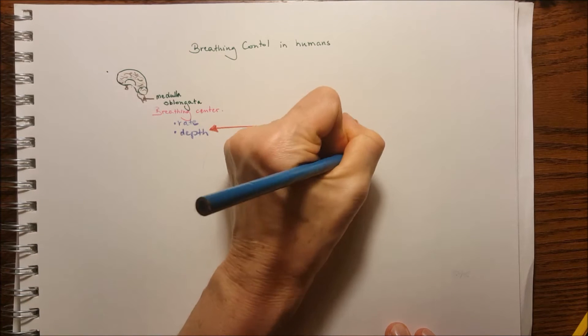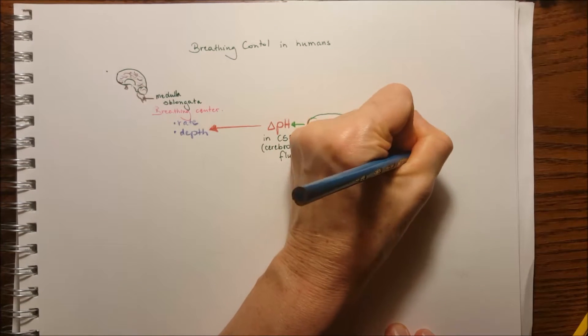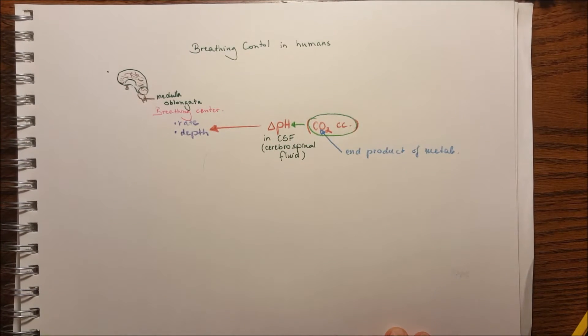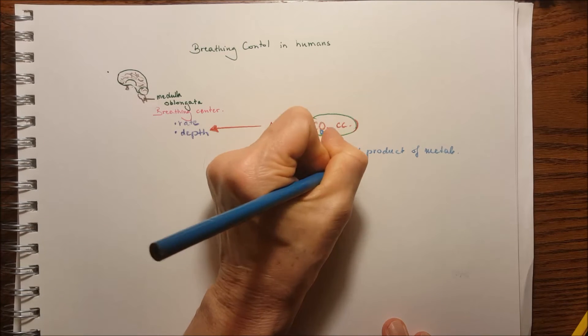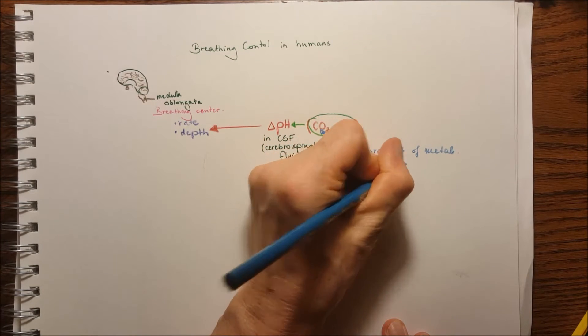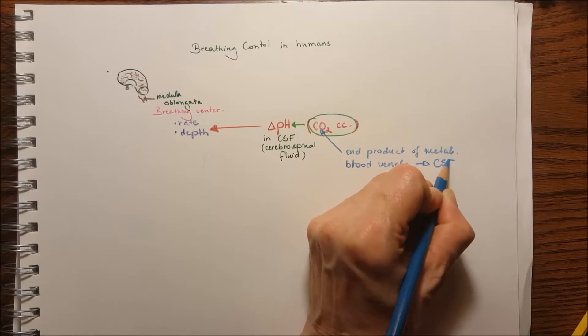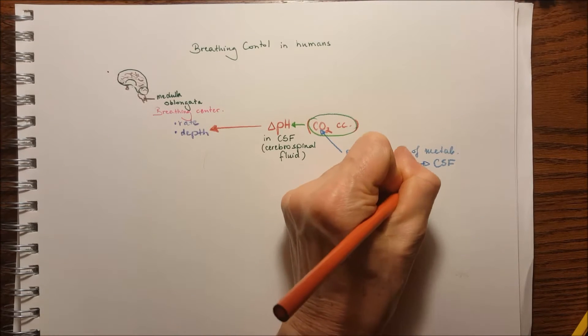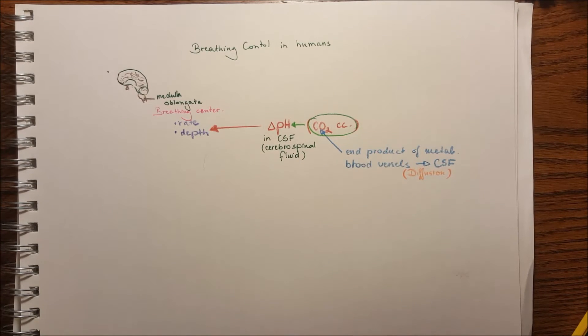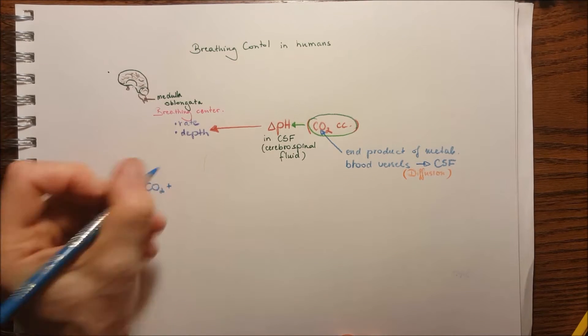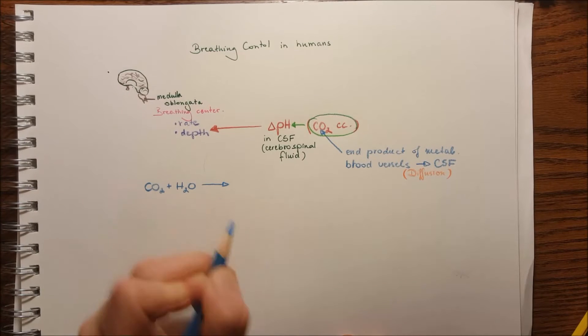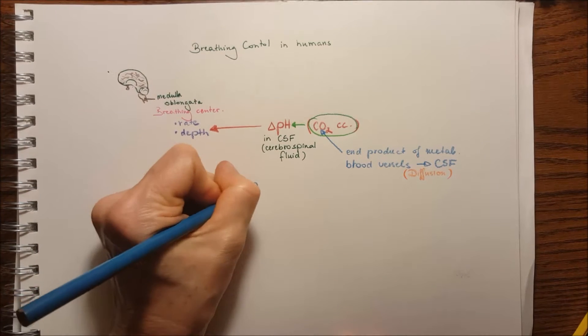CO2 is the end product of metabolic activities. They get into the blood vessel and diffuse into the cerebrospinal fluid. So CO2 is going to bind with water and forms a carbonic acid.